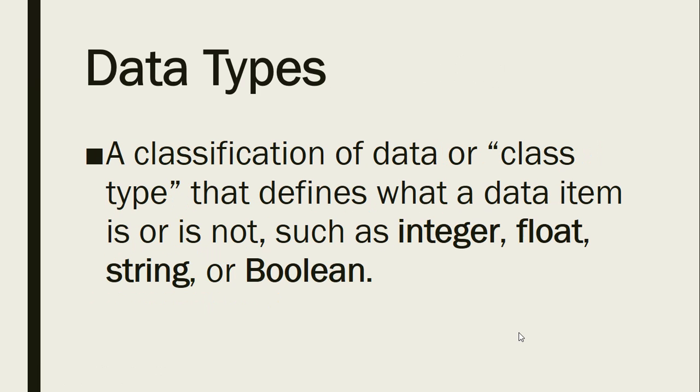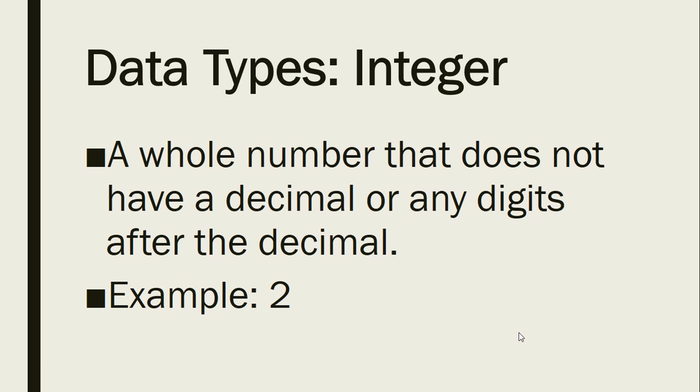All right, the first one is integer, and so an integer is pretty simple. It's a whole number that does not have any digits or a decimal after it. So an example would be 2, or 175, or 23. But the moment we add a decimal and then a number after it, it's no longer an integer.